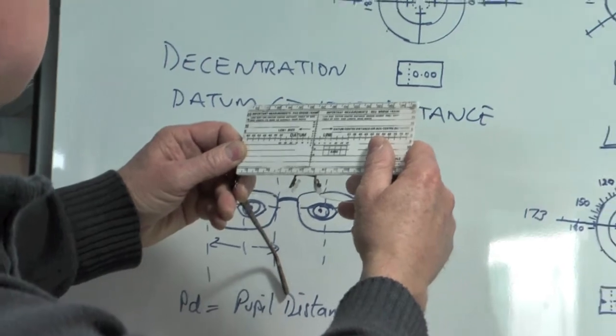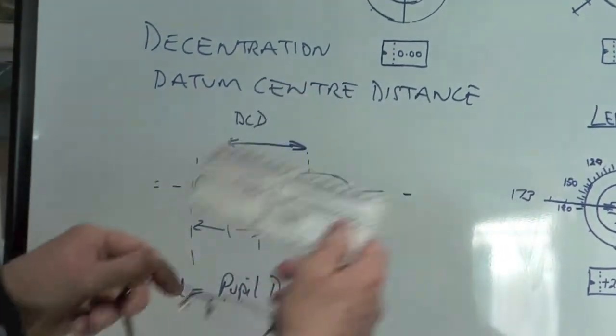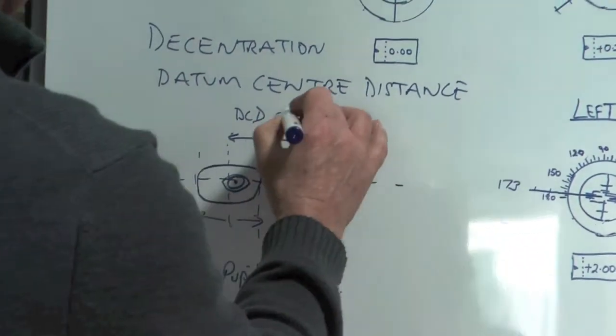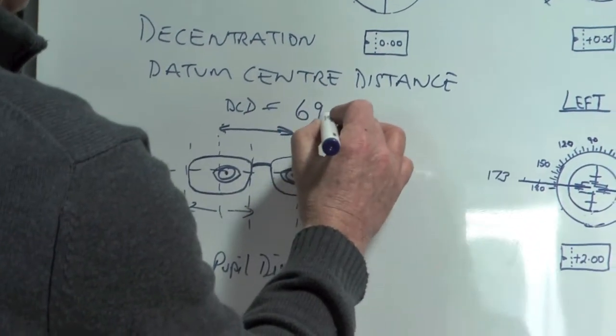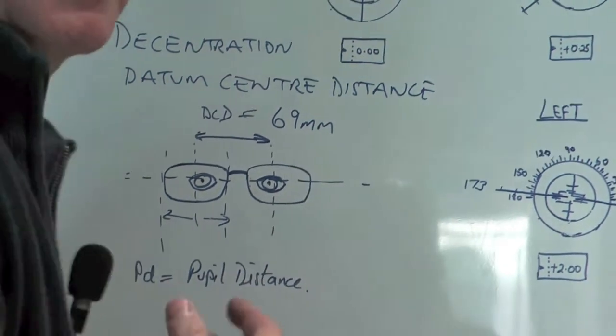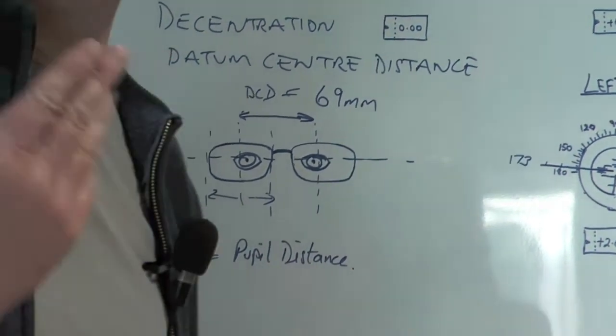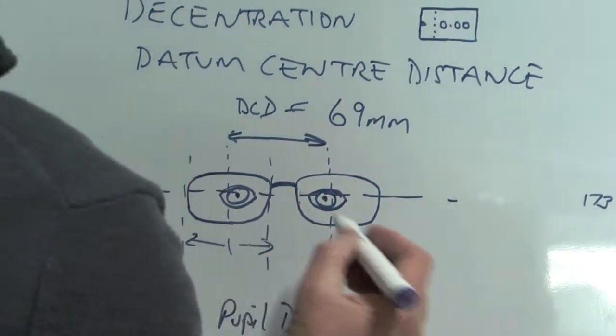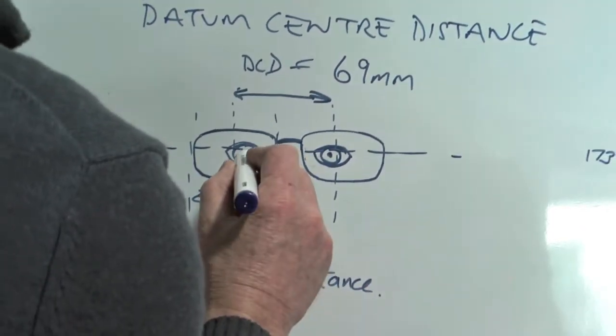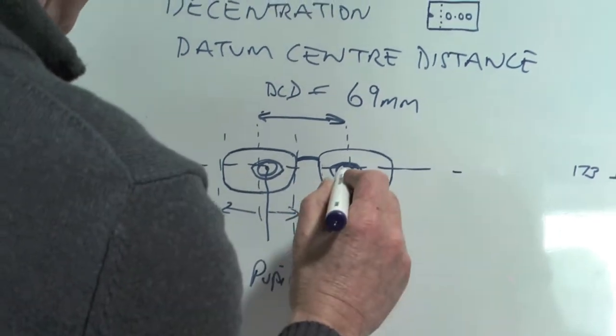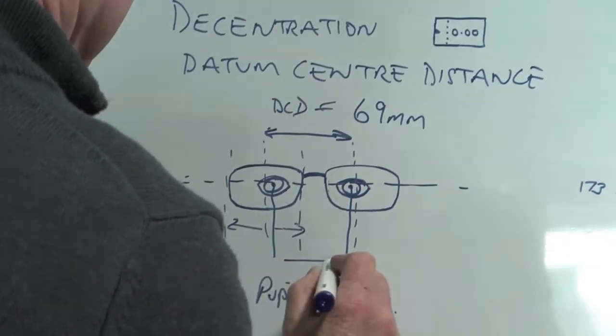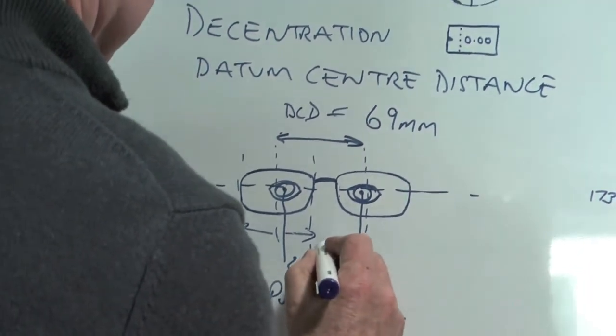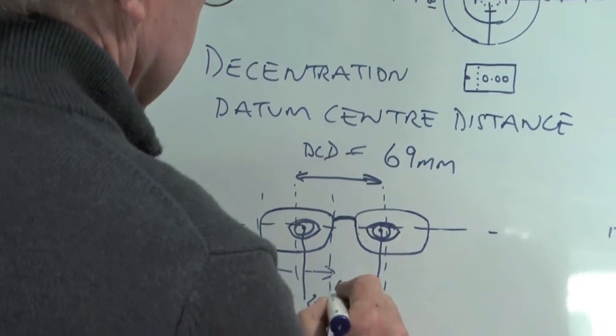And that measures 69. So we have a DCD in this case with this frame is 69 millimeters. Now let's say that this person has a PD, which is like what I've got, which is 62. So the pupil distance, which is the distance between the pupils, that distance there is 62.